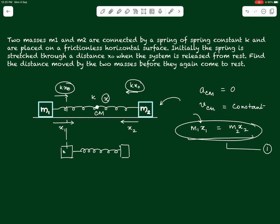By the time the spring reaches its natural length, both m1 and m2 would have moved a certain distance and gained some velocity, because the spring was constantly accelerating them. At the mean position — where the spring is at natural length and exerts no force — all the spring potential energy converts into kinetic energy of the two blocks. The blocks will not stop here; in fact, this is where they move at maximum possible speed.